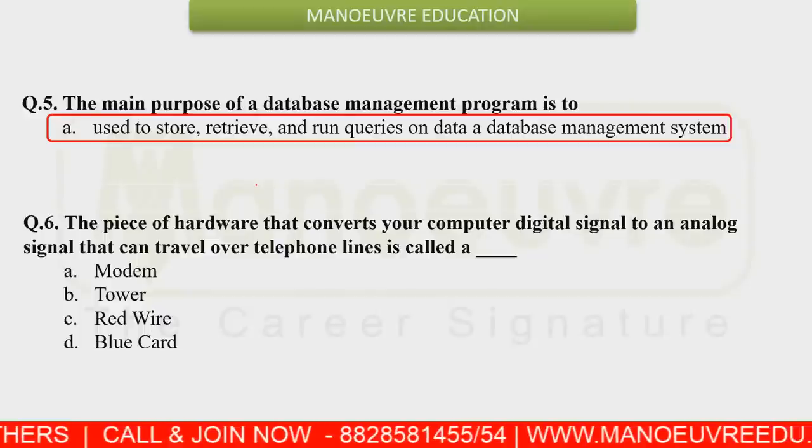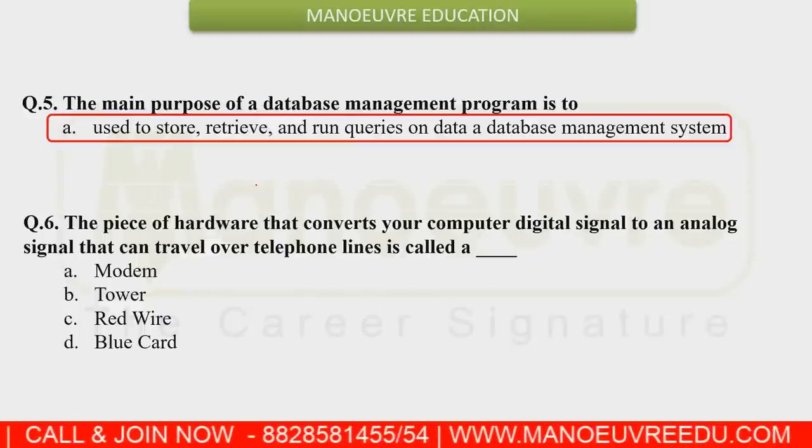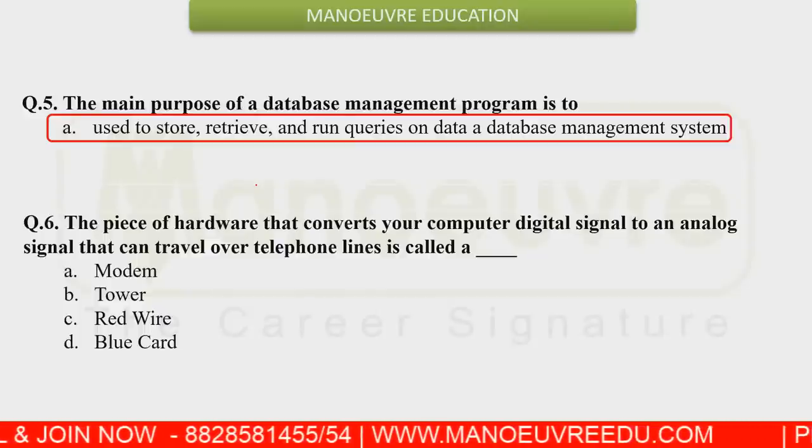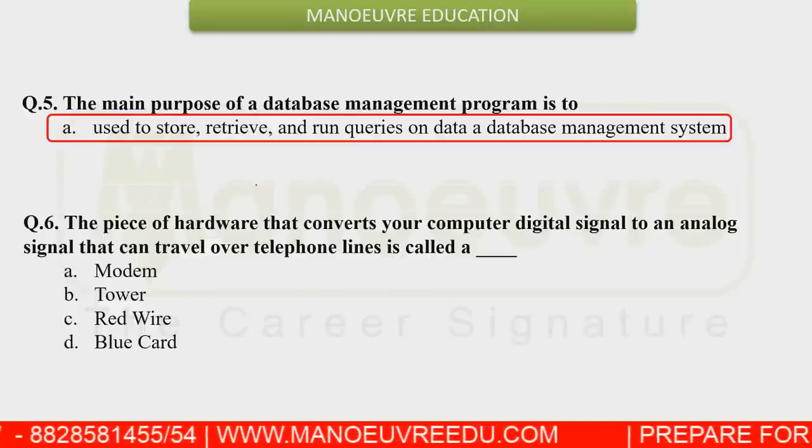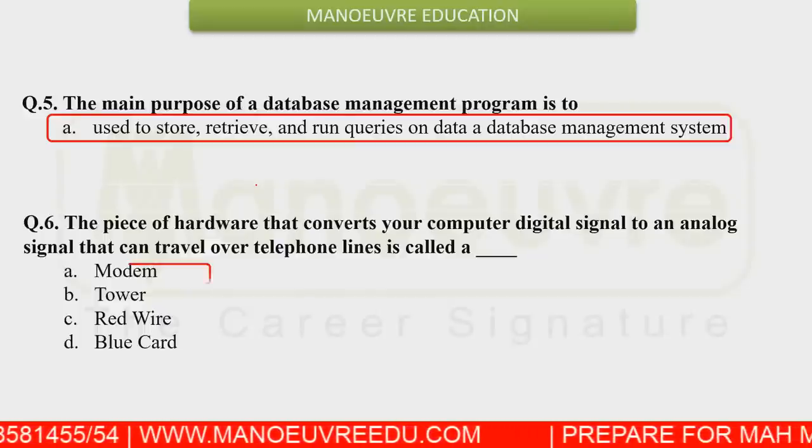Since the question specifically asks about digital to analog conversion that travels over telephone lines, the answer is the modem.